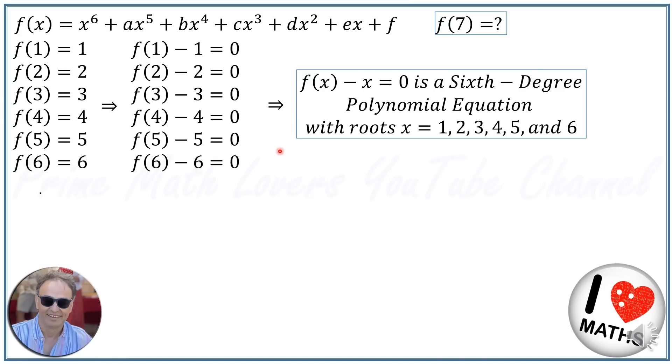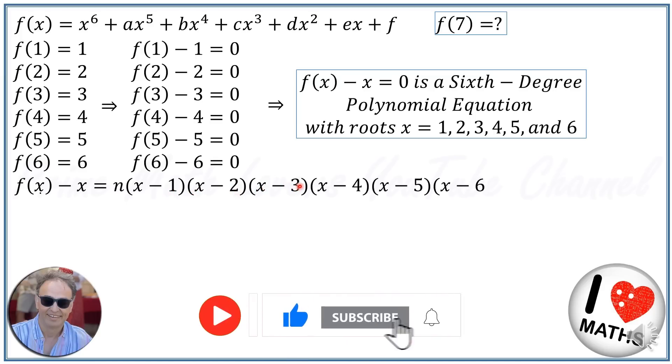As a result, we can write down this equation as f(x) - x = n(x - 1)(x - 2)(x - 3)(x - 4)(x - 5)(x - 6). Now if we put x = 1, f(1) - 1 will be equal to 0 since this term will be 0, so it is a valid root. Similarly, if we put x = 4, f(4) - 4 will be 0.